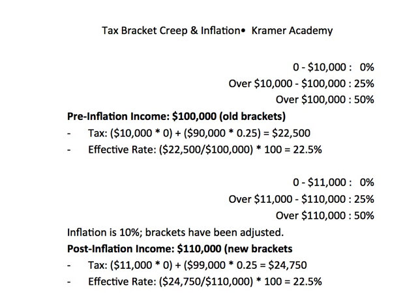So why does tax bracket creep exist? Inflation is a natural economic phenomenon, while tax codes must be adjusted through policy. It may take longer for tax codes to be updated than for inflation to take effect. Also, central banks try to use economic policy to keep inflation under control, generally at an annual rate of about 2–3%, but they don't always succeed.